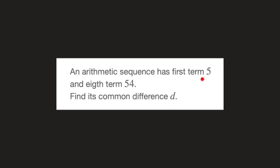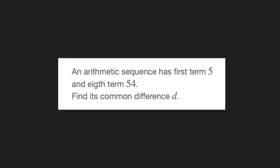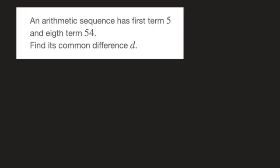An arithmetic sequence has first term equal to 5 and eighth term equal to 54, and we need to find its common difference. Let's start by moving the question to the side like so. The trick for answering this type of question is to really pick up on the information that we're given.